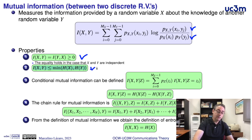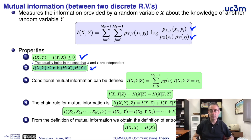The mutual information is also upper bounded, and the upper bound is the minimum of the entropy of any of these random variables. The mutual information is always lower than the entropy of any of these random variables.